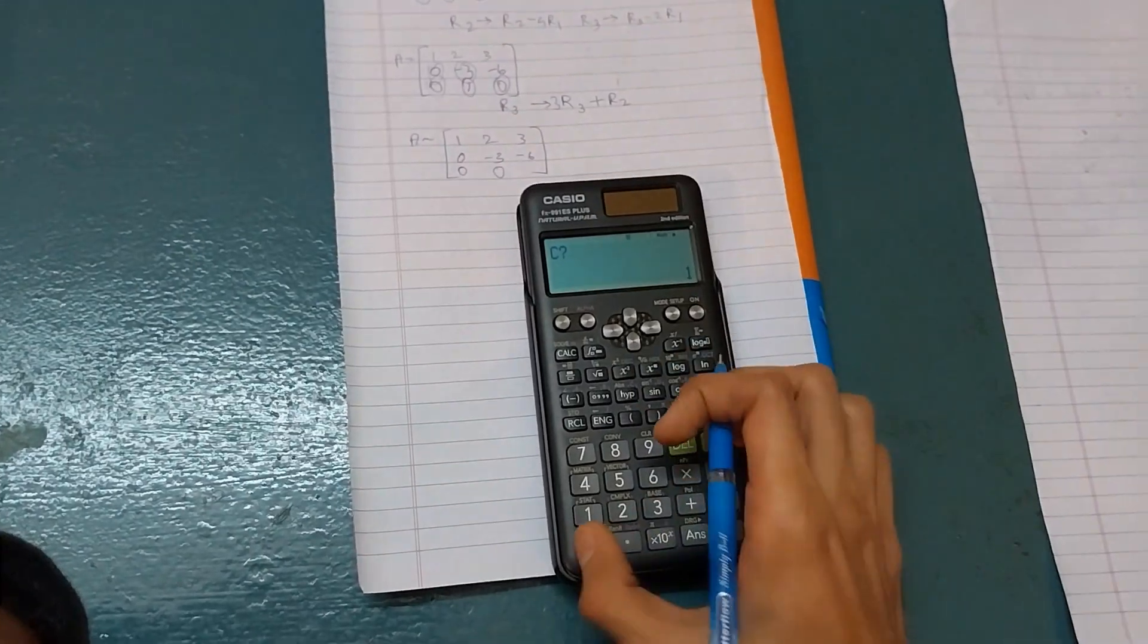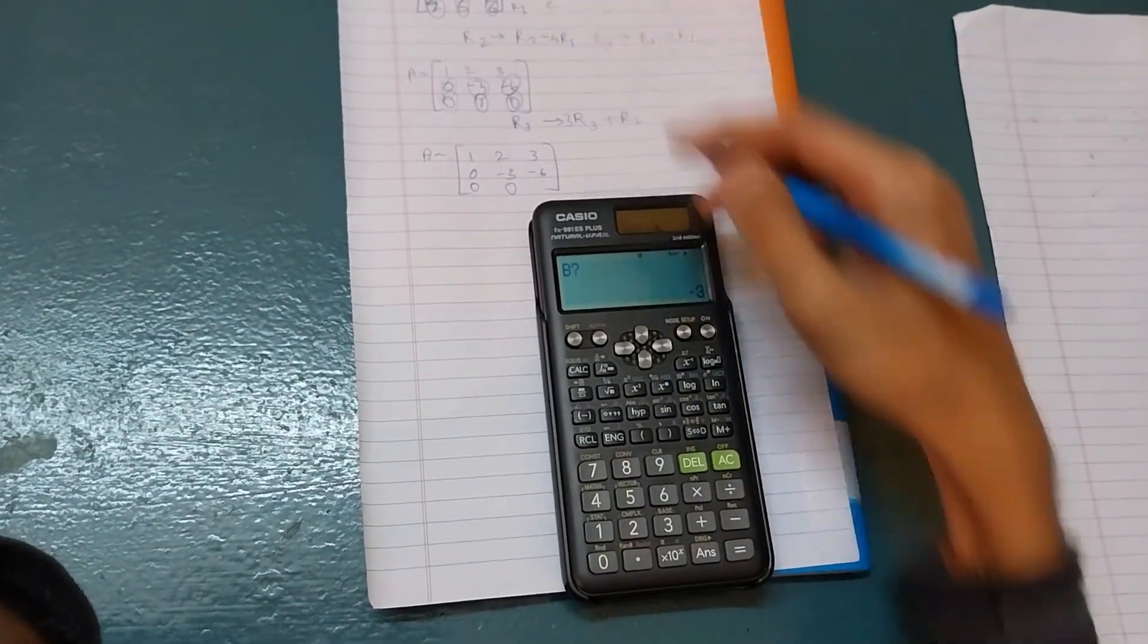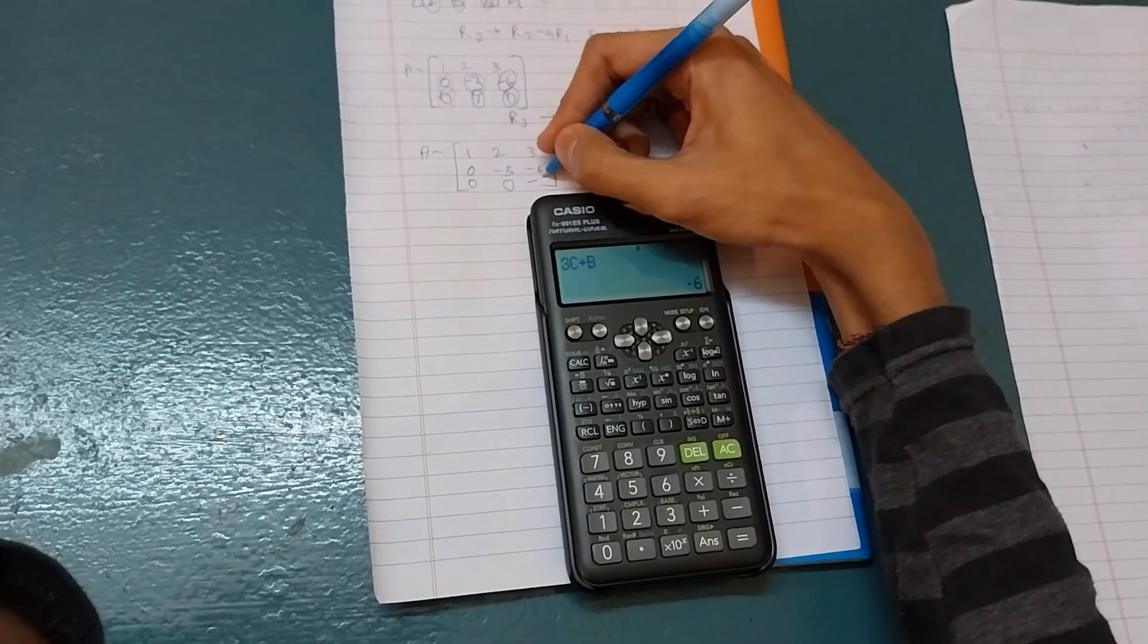Then C value is 0. Then B value is minus 6. So this is minus 6.